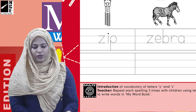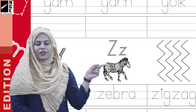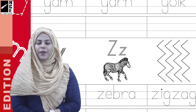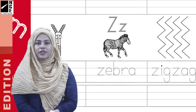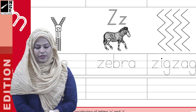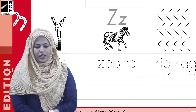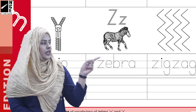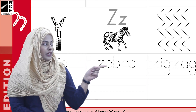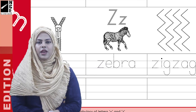Now move on to the next picture, which is a zebra. You know, yeh ek animal hai. Let's trace the word zebra — it's Z-E-B-R-A. Zebra.